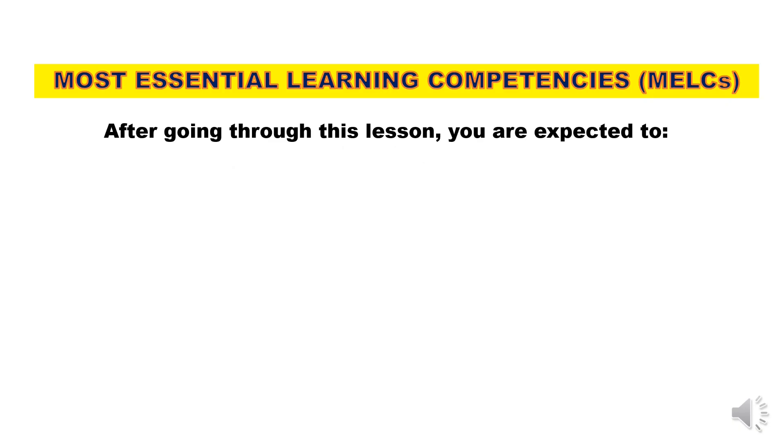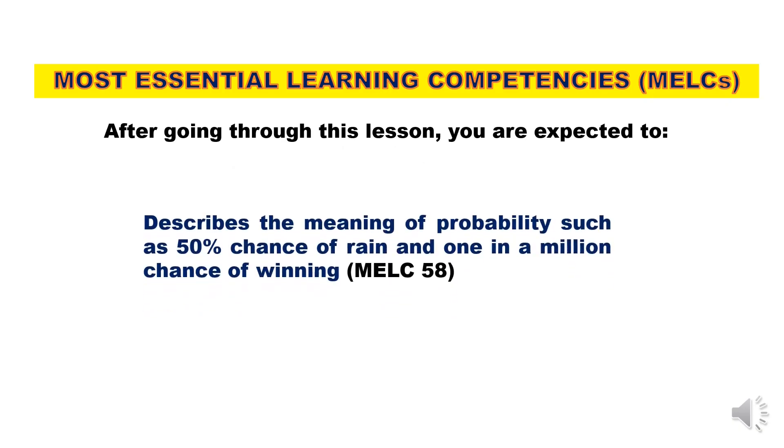After going through this lesson, you are expected to describe the meaning of probability, such as 50% chance of rain and 1 in a million chance of winning, and perform experiments and record outcomes.